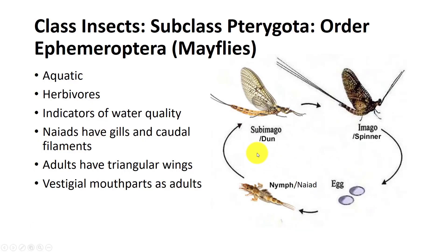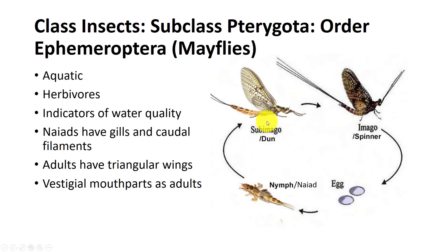Order Ephemeroptera contains mayflies. Adults can often be caught at night near water. They go through hemimetabolous metamorphosis, which is an incomplete metamorphosis. Their nymphal or naiad stage, when it's an aquatic insect, looks similar to the adult stage. Mayflies are herbivores and indicators of good water quality. The naiads have gills and caudal filaments, while adults have triangular wings.